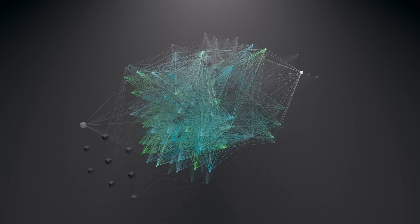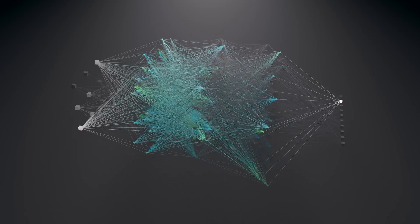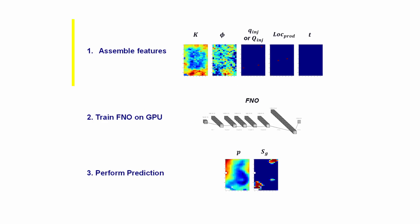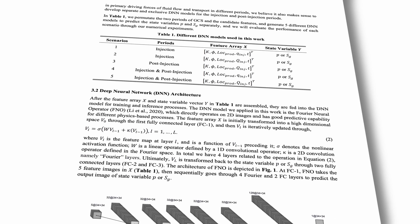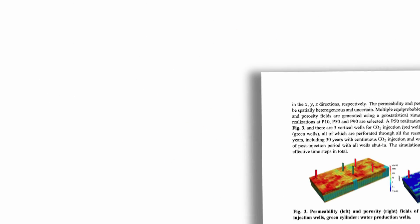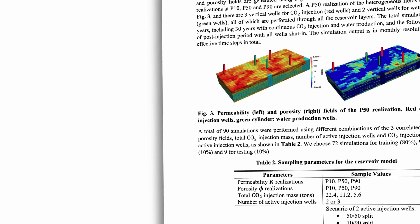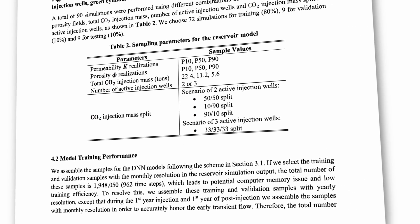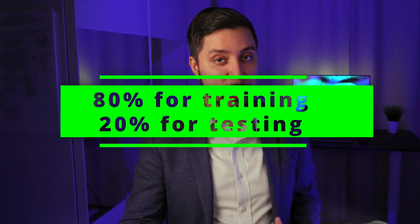Let us talk about which features we might use for the training process. Features are defined as the input variables for the deep neural network. The candidate features available consist of rock-related properties, CO2 injection information, location of water injection wells, and time step size. They analyze five alternative scenarios to help them choose which combination of features would best predict the evolution of state variables. 90 simulations are performed using the associated permeability-porosity fields. It was decided to use 72 simulations for training, which accounts for 80% of the whole dataset, and the rest 20% for testing and validation purposes.